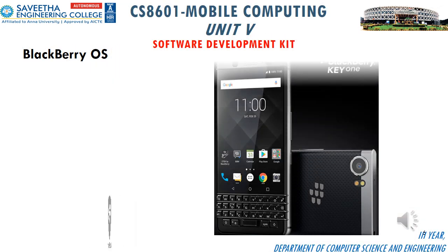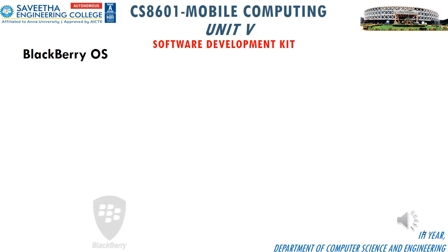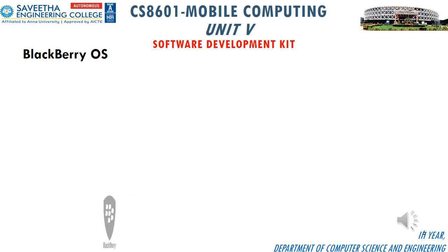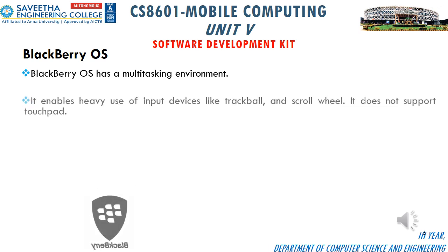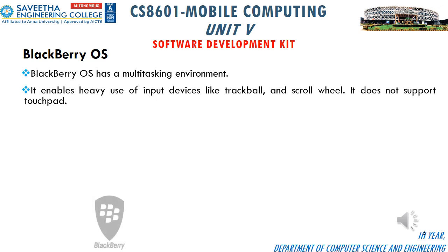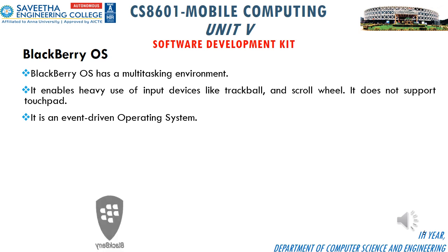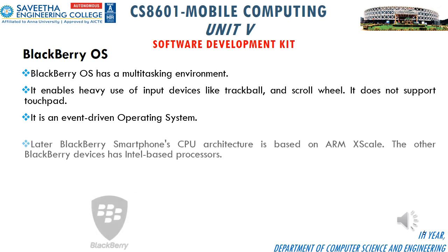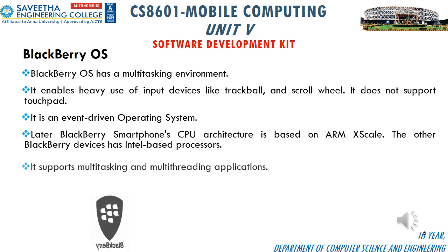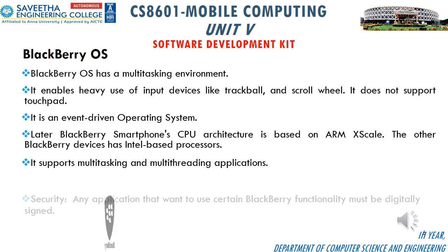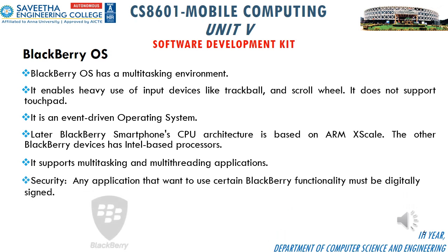BlackBerry smartphones, tablets, and services were originally designed and marketed by the Canadian company BlackBerry Limited. BlackBerry OS has a multitasking environment and enables heavy use of input devices like trackball and scroll wheel. It does not support a touchpad and is an event-driven operating system. The BlackBerry smartphone CPU architecture is based on ARM XScale, while other BlackBerry devices have Intel-based processors. BlackBerry provides high security — any application that wants to use certain BlackBerry functionality must be digitally signed.